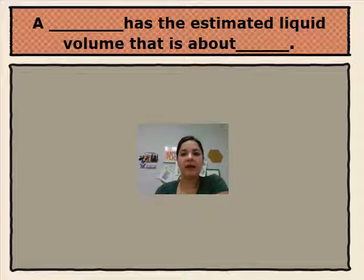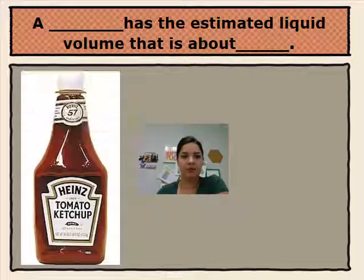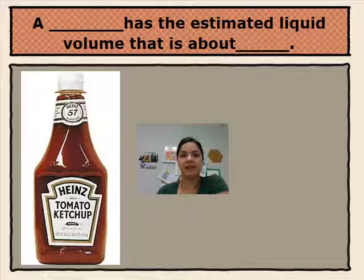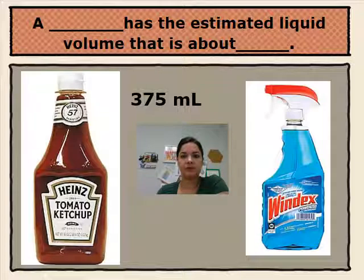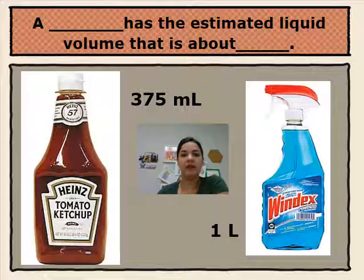Using the sentence stem 'A blank has the estimated liquid volume that is about blank milliliters': a ketchup bottle has the estimated liquid volume that is about 375 milliliters. A Windex bottle has the estimated liquid volume that is about 1 liter.